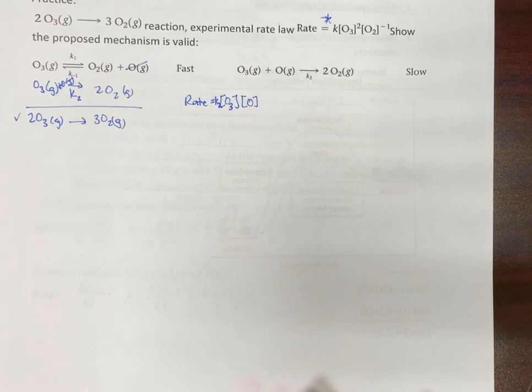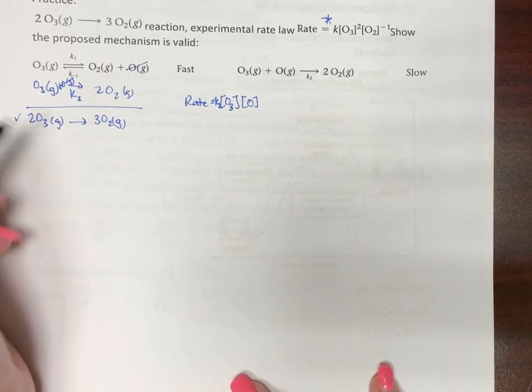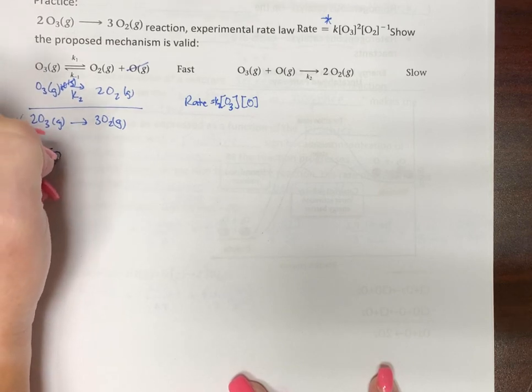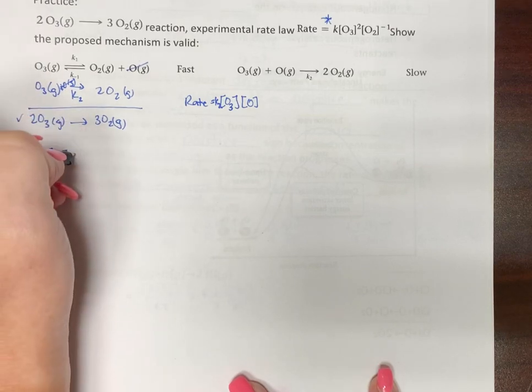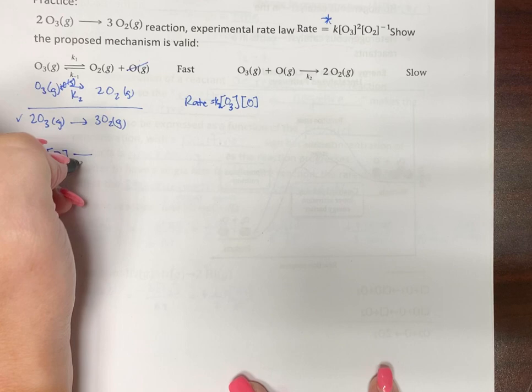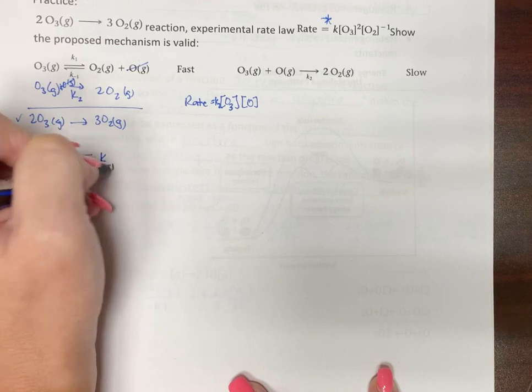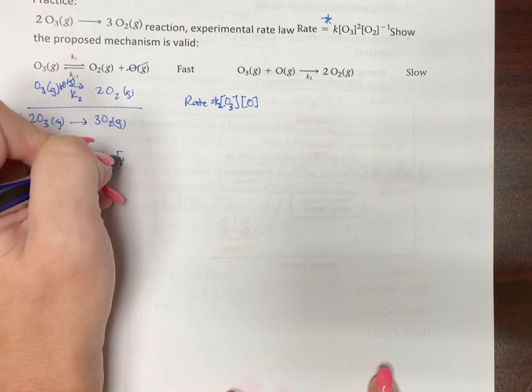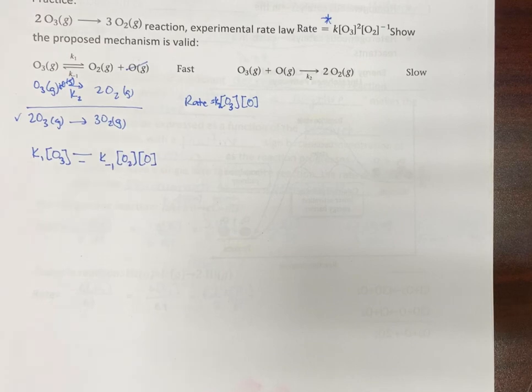So this would be K2. So we need to take our first reaction. We need to put it at equilibrium. So that means K1 times the concentration of O3. And that's going to equal, so rate of our forward equals our rate of reverse equals K inverse, backwards K times O2 and oxygen. That's an equal sign.